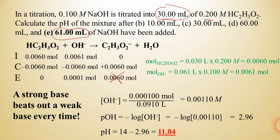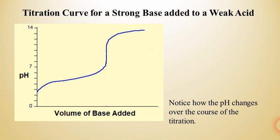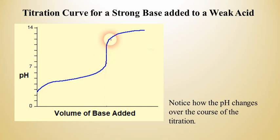That was a fairly lengthy problem — over 15 minutes. Now let's look at the titration curve, which is different from what we've seen before. It looks somewhat similar to the strong base/strong acid titration curve, but it's shifted upwards because we started with a weak acid, so the pH started out a little higher. As we add base, the pH doesn't go up very much, and then very close to the equivalence point, the pH shoots up very quickly. Once significantly past the equivalence point, it starts to level out again.